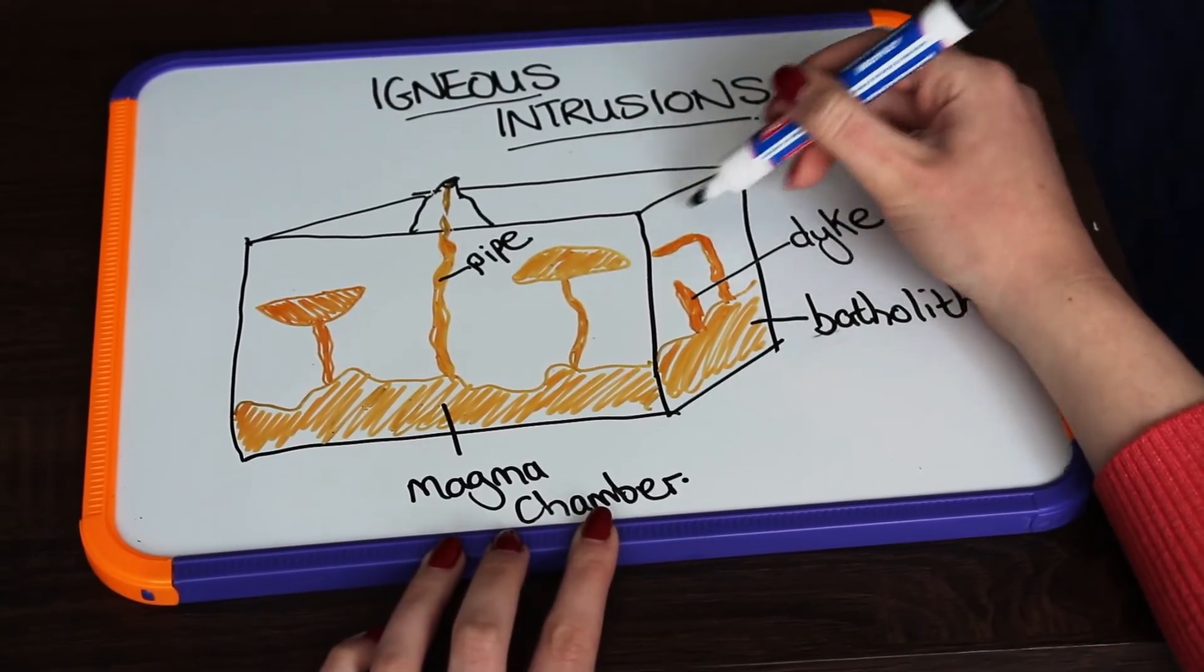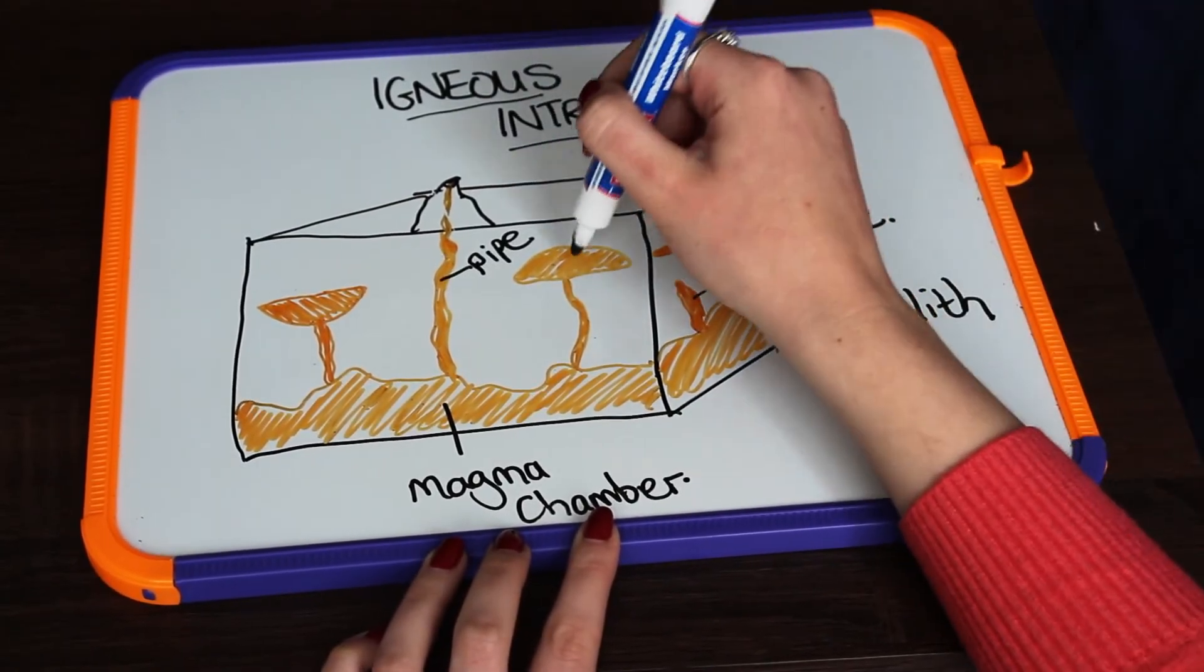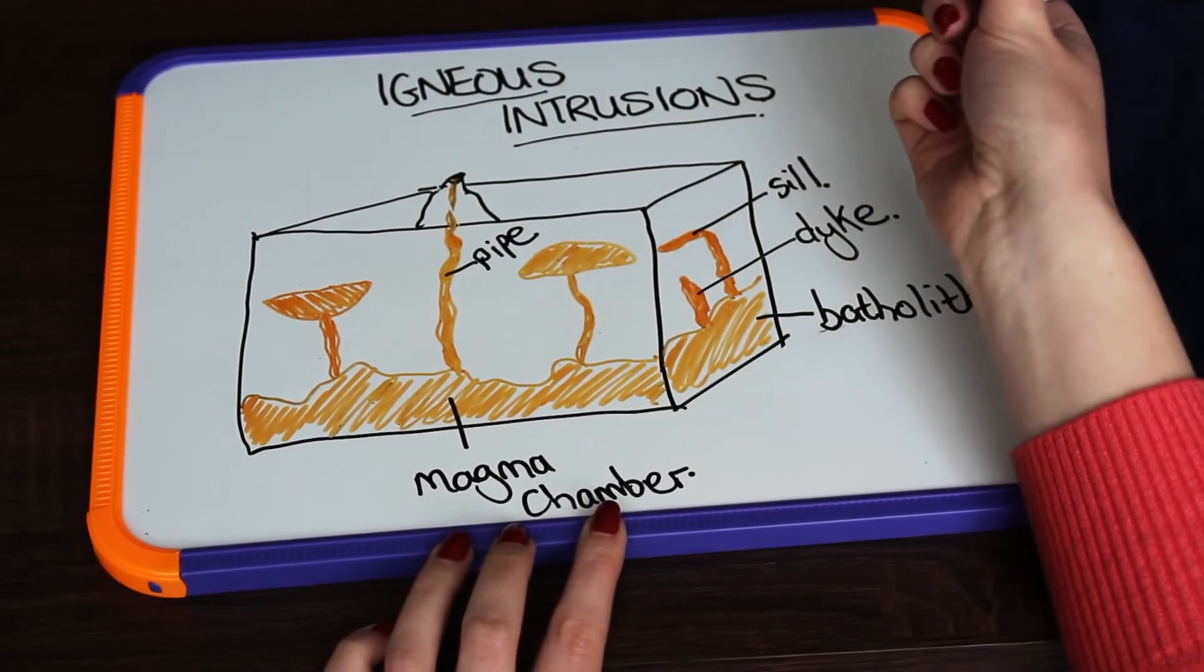This horizontal igneous intrusion is called a sill.